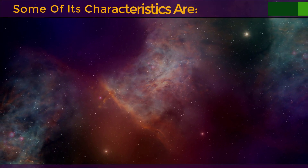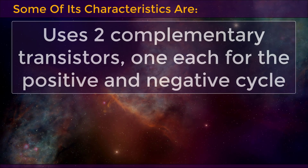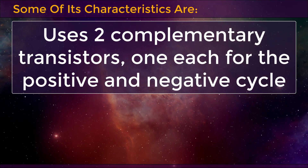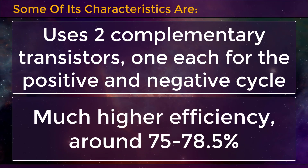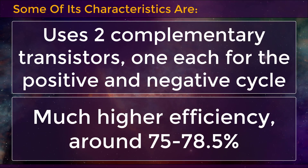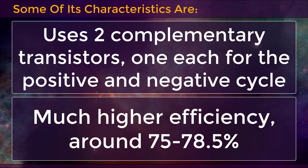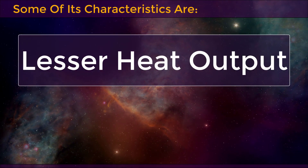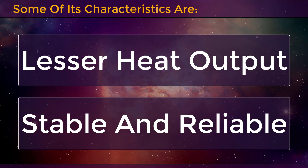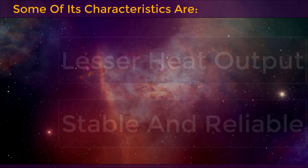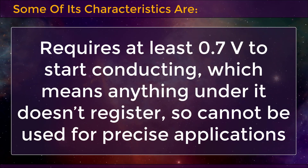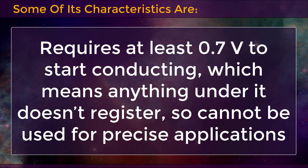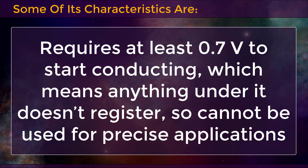Some of the characteristics are: it uses two complementary transistors, one each for the positive and negative cycle. It has much higher efficiency, around 75 to 78.5%. It produces lesser heat output and is stable and reliable. It requires at least 0.7V to start conducting, which means anything under it doesn't register, so it cannot be used for precise applications.